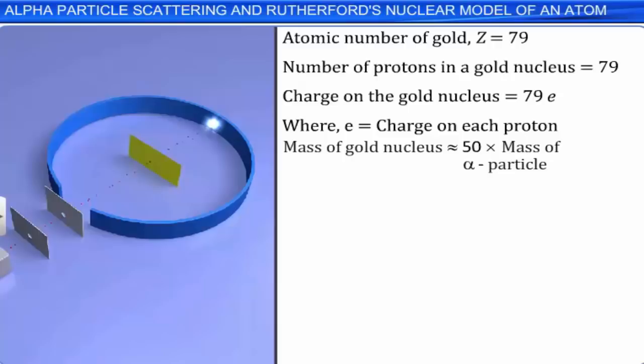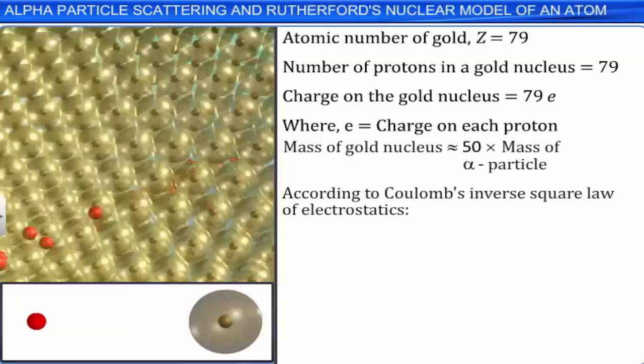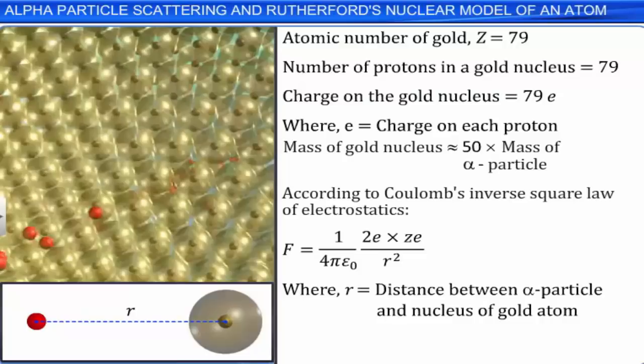According to Coulomb's inverse square law of electrostatics, the magnitude of the repulsive force between the alpha particle and the gold nucleus F is equal to (1/4πε₀) × (2e × Ze) / R², where R is the distance between the alpha particle and the nucleus of the gold atom. This force acts along the line joining them, and its direction and magnitude continuously change as the alpha particle approaches or recedes from the nucleus.